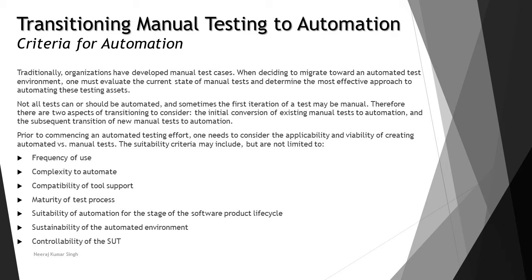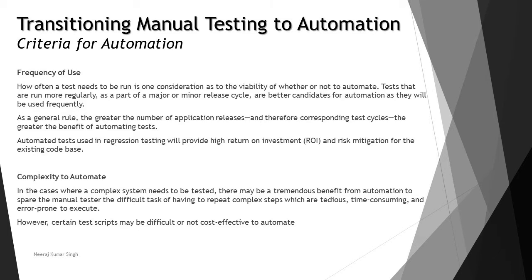Here is a list of the major criteria we'll be covering in topic 6.1 — criteria for automation: frequency of use, complexity to automate, compatibility of tool support, maturity of test process, suitability of automation, and sustainability of the automation environment, controllability, and more. This is just part one and we'll be covering additional criteria in part two as well.